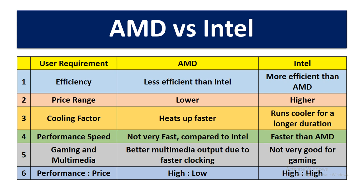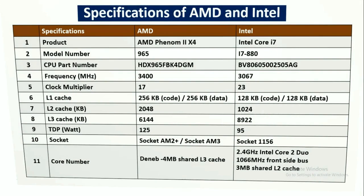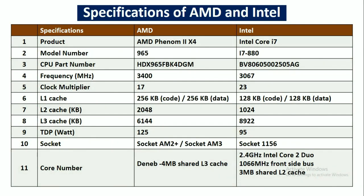So this is about the comparison between AMD processor and Intel processor. Next, we will go for the specifications of AMD and Intel processor. The product of AMD is the AMD Phenom 2 X4, and for Intel processor it is the Intel Core i7.